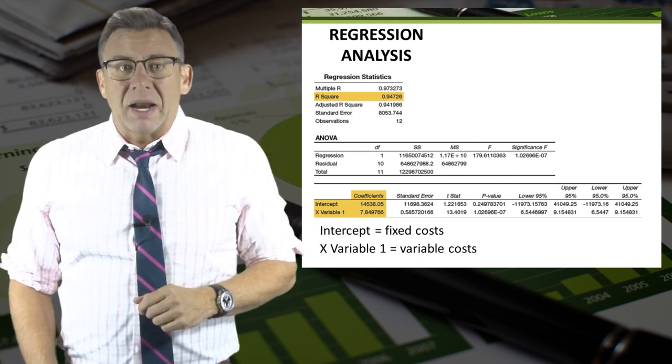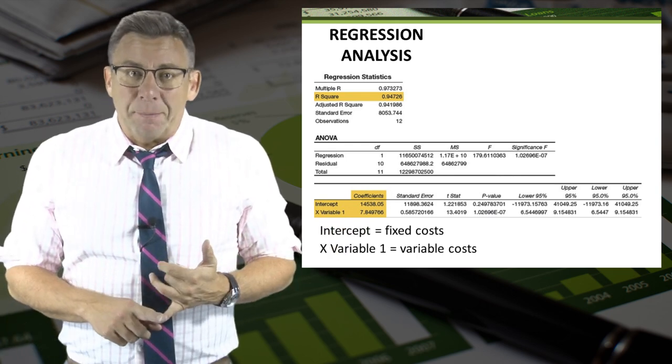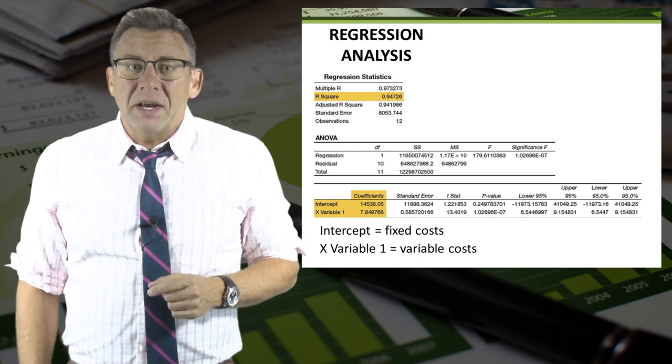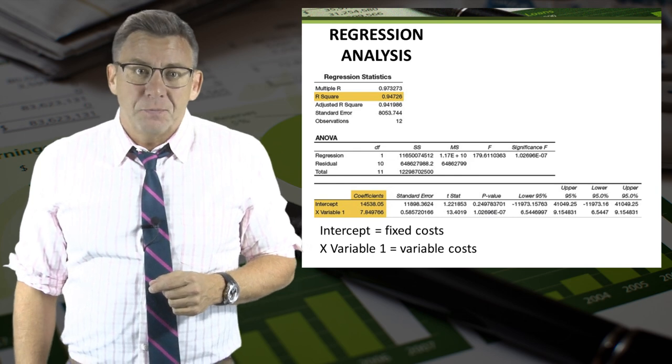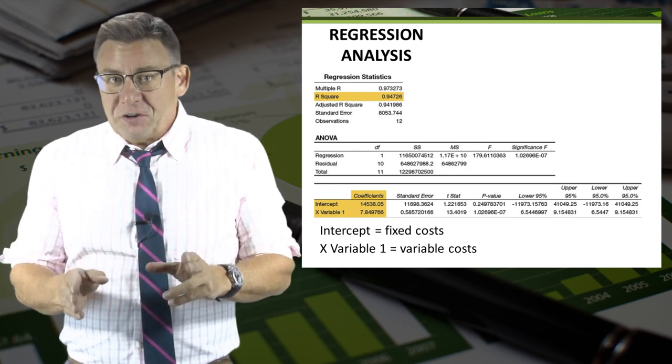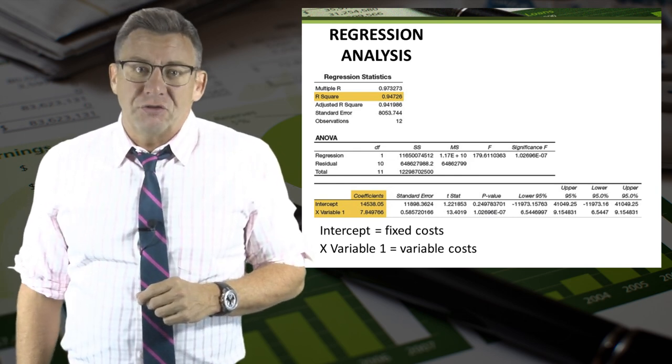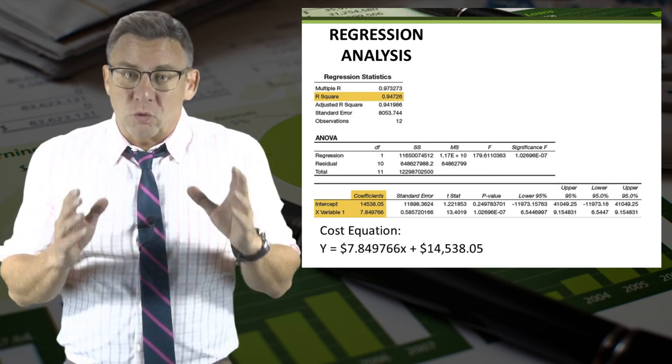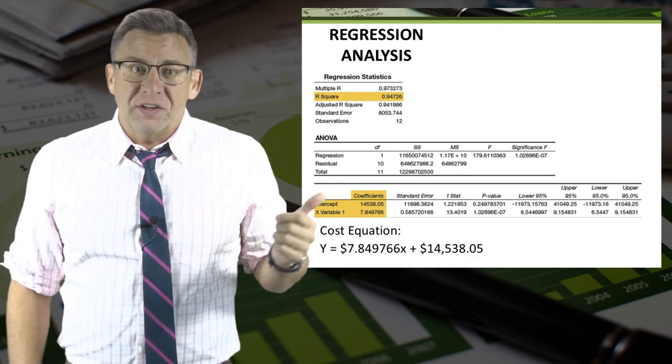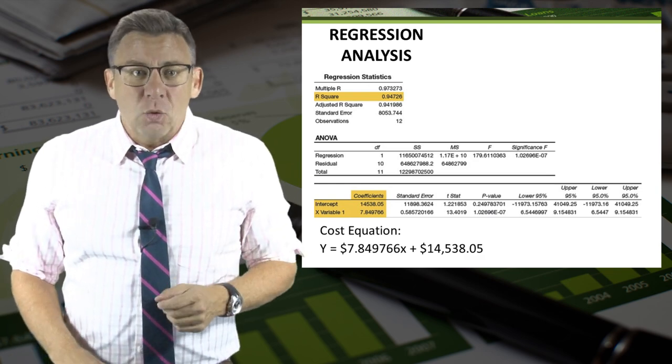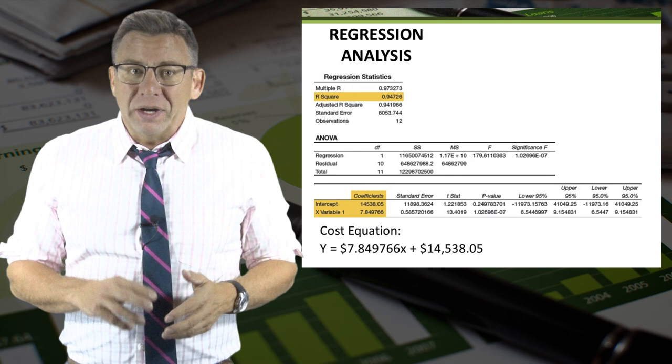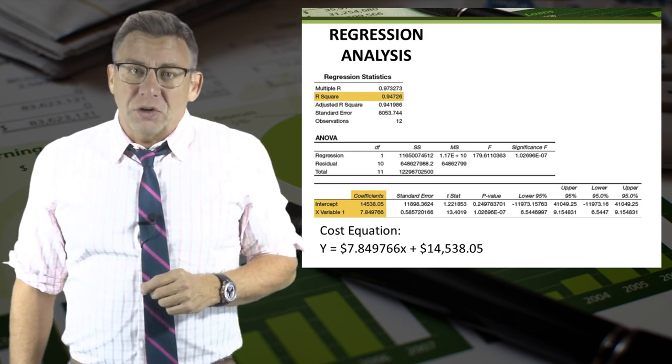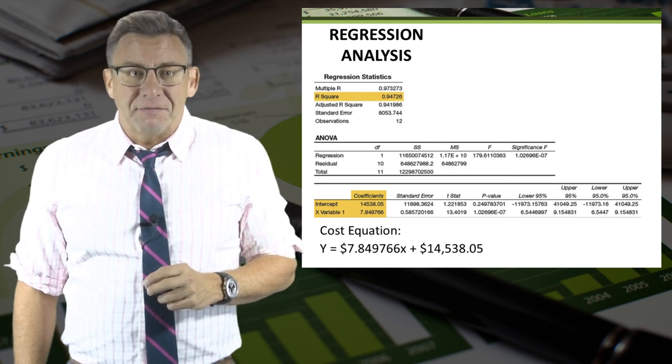Let's start with the two at the bottom. The intercept is the fixed cost, and the x variable 1 is the variable cost. We use the coefficient amounts for the cost equation. Since we know the variable cost per unit and the fixed cost, we can write the cost equation, which in this case is y equals 7.849766x plus 14,538.05.